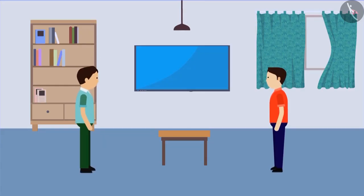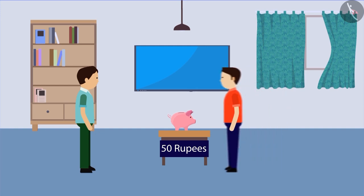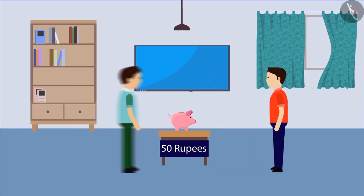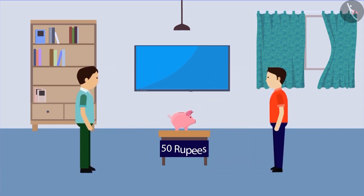Two friends, Ram and Raj, have a piggy bank which has 50 rupees. They individually deposit money in the piggy bank. As a result, the final amount reaches 80 rupees in the piggy bank.